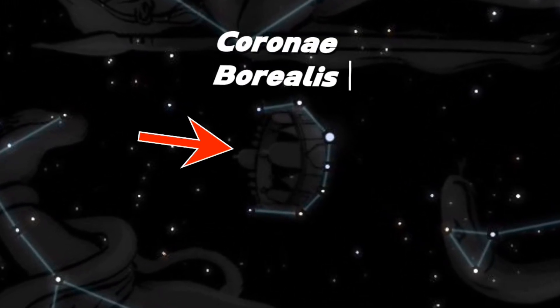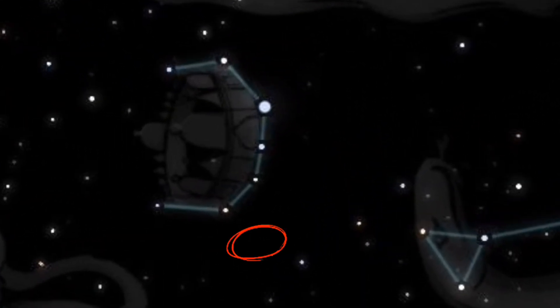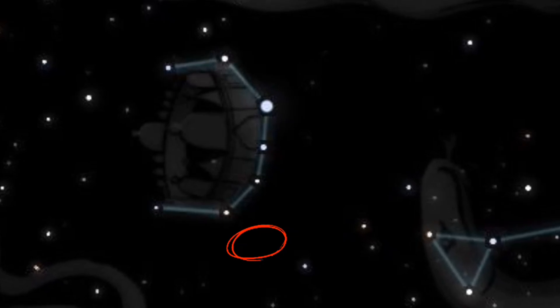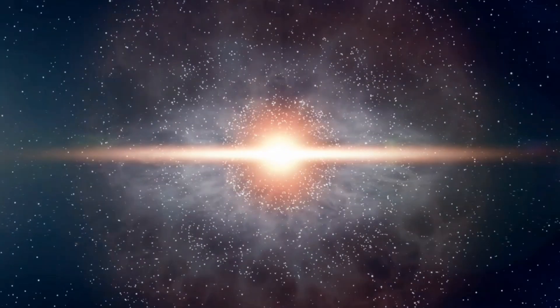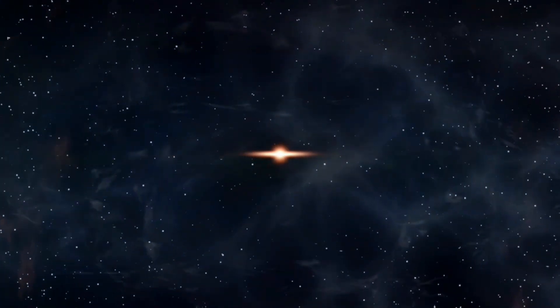It's called Corona Borealis. Right now, you can see a spot on the screen where nothing is visible yet, but according to NASA scientists, very soon this year, a massive explosion is going to happen there, which will be clearly visible to our naked eyes.